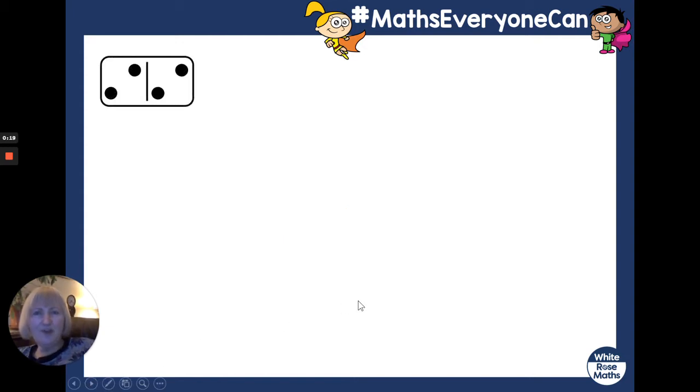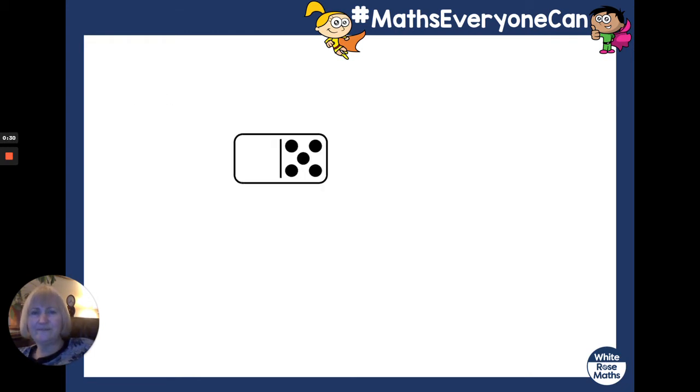When you see the domino, tell me how many spots as quickly as you can. What did you say for that one? Four. Well done. How many? Did you remember? Five. Good. Three. Well done.